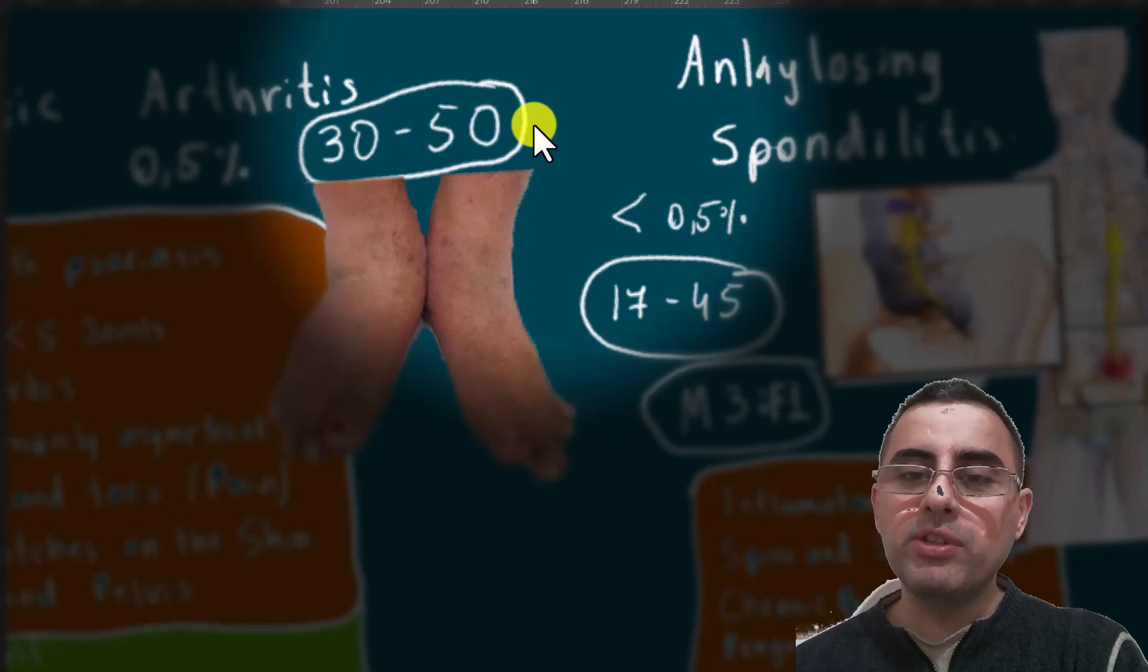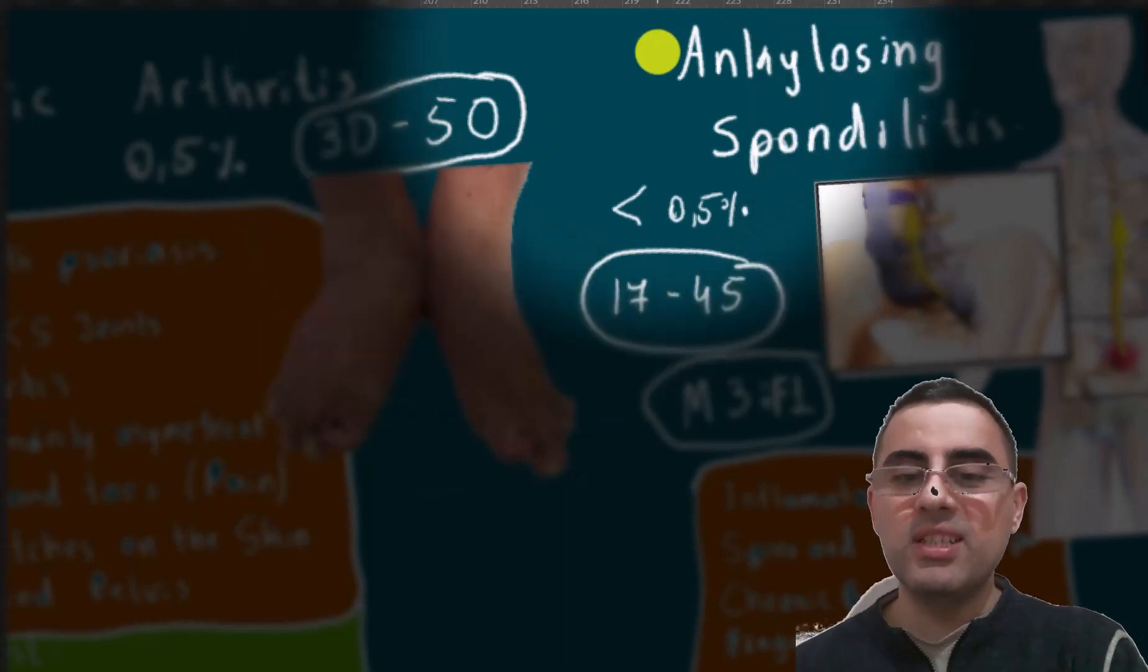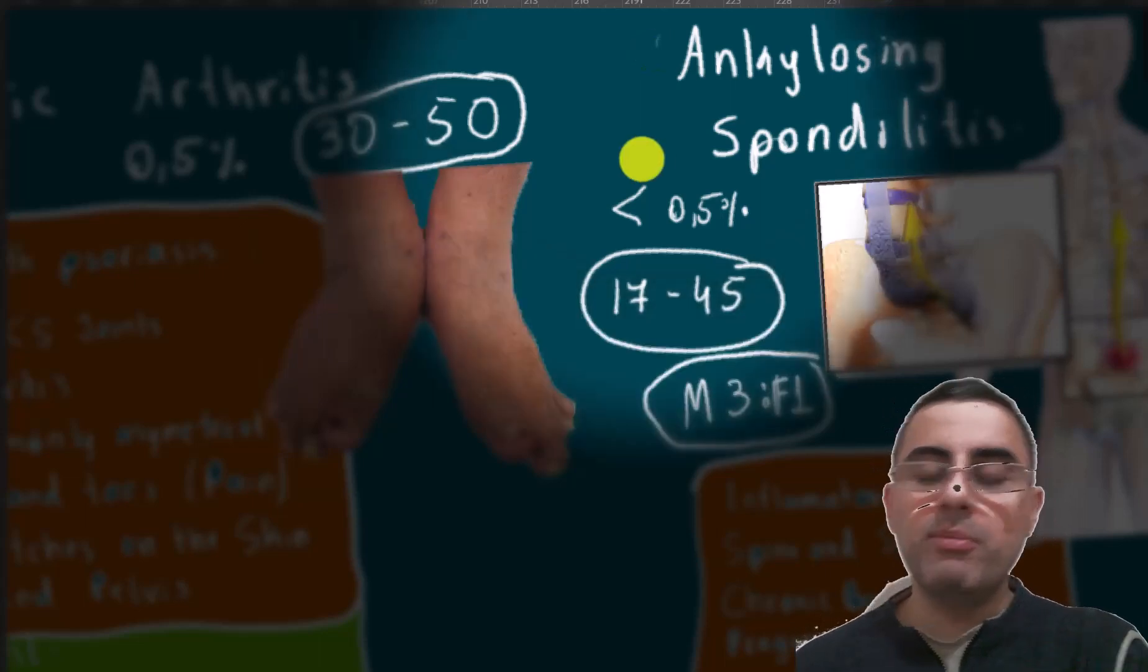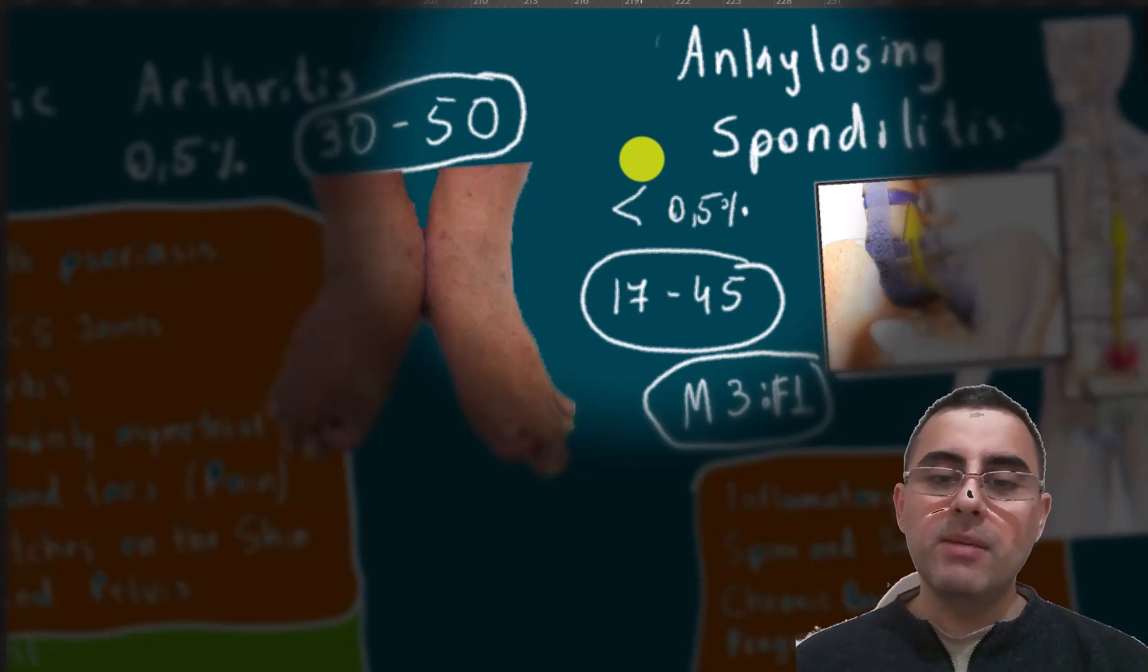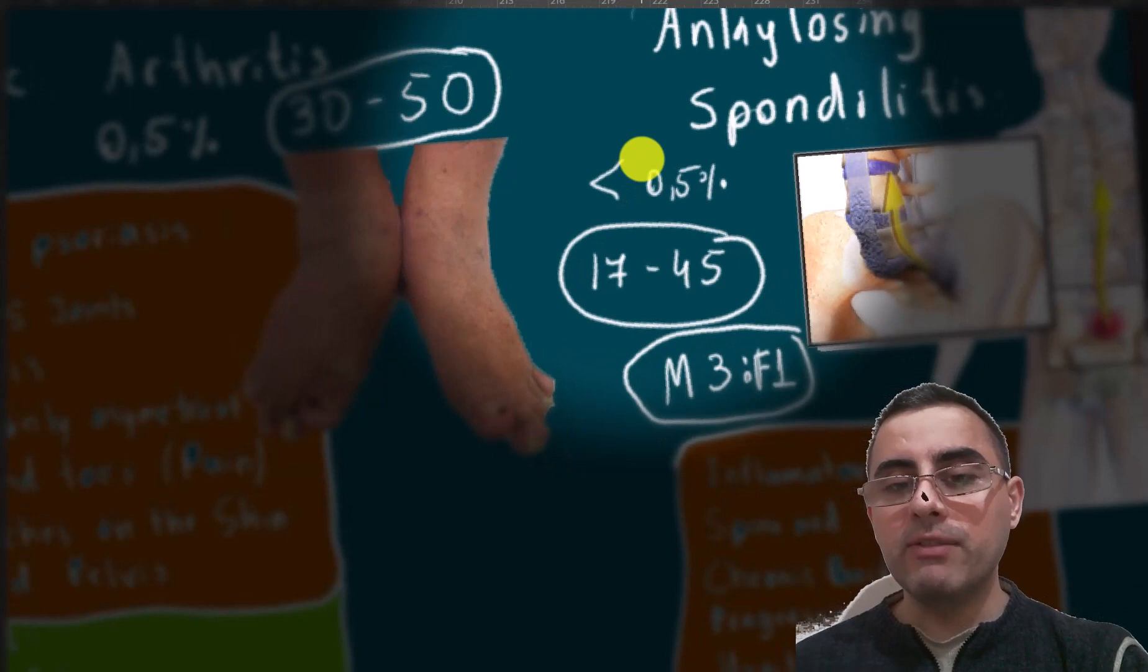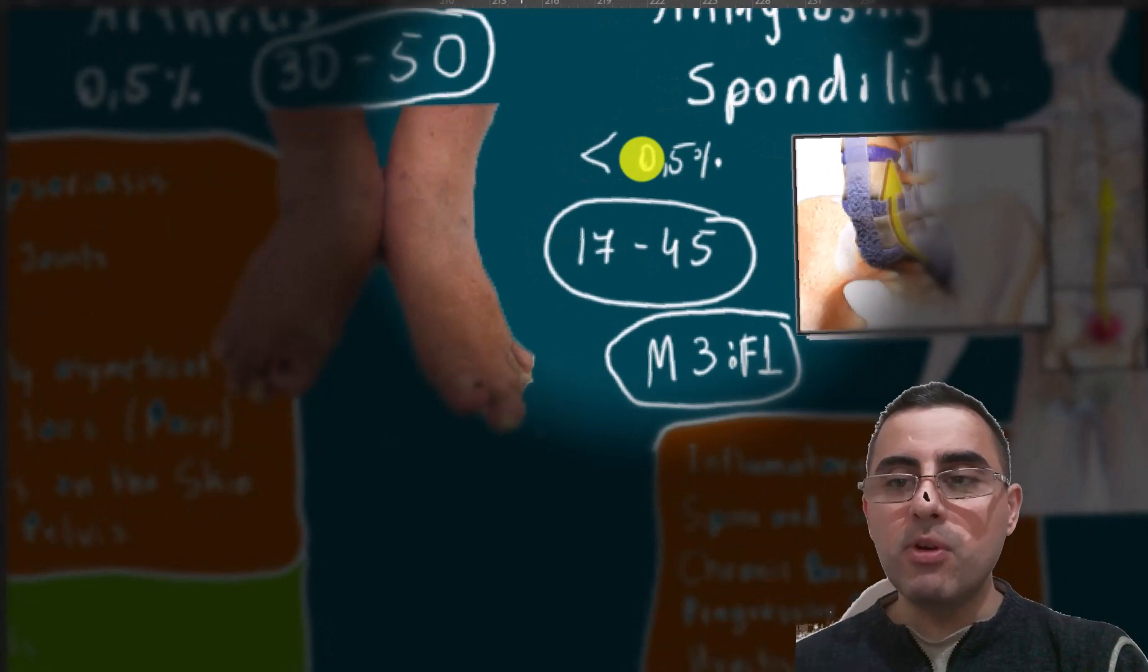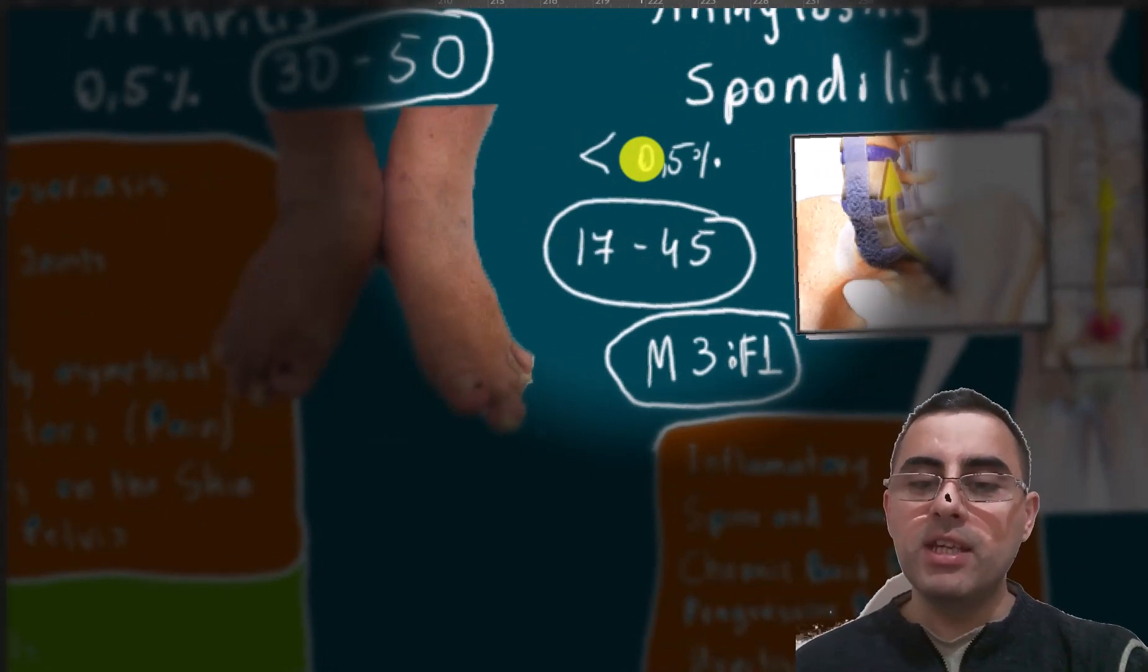Fifth is ankylosing spondylitis. It's not a very common disease but it's an important disease. It affects less than 0.5% of the population. Usually it's diagnosed between 17 to 45, so it's relatively common at young ages, and much more common among males. Three to one is the male to female ratio.